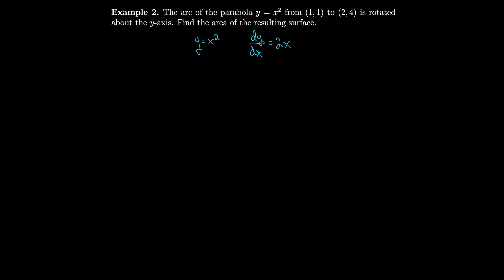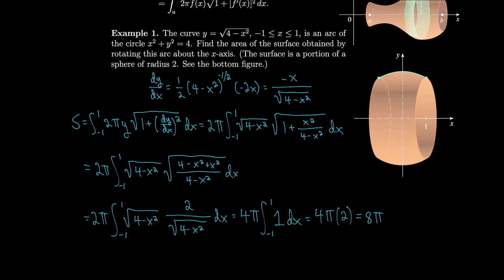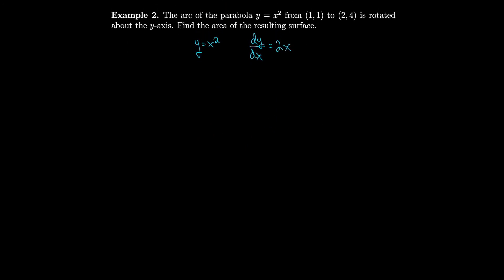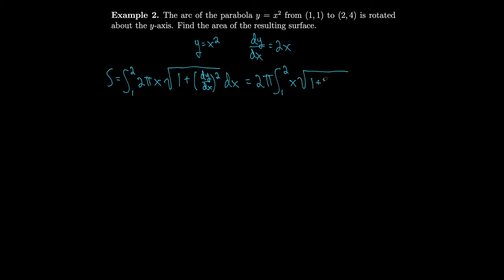In this case we have to be a little careful — we're rotating around the y-axis, not the x-axis. So instead of going up a certain height y, our radius is a length x. That means our integral becomes S equals the integral from 1 to 2 of 2π times x instead of 2π times y, and we keep our square root of 1 plus the derivative squared. So that becomes 2π times the integral from 1 to 2 of x times the square root of 1 plus 4x².